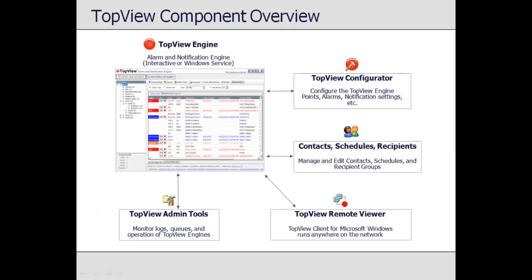There are five main components to Top View. The Top View engine is the Alarm and Notification engine. There may be multiple engines running on the same machine, each monitoring different points and sending notifications based on a different Top View configuration. The engine window may be visible if running interactively, or may be hidden if running as a background Windows service.